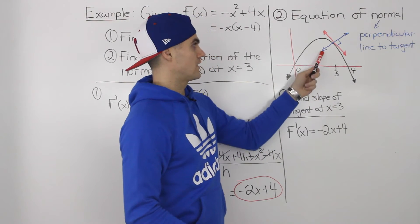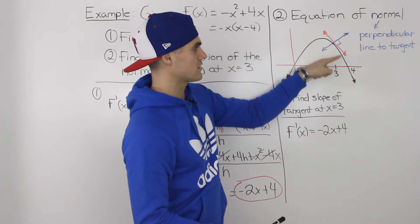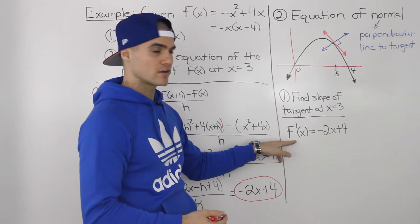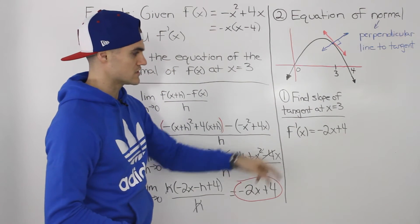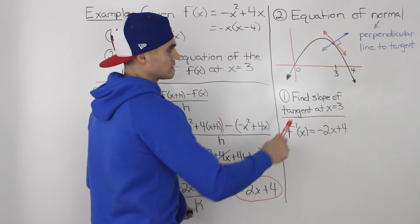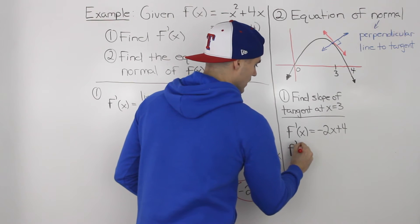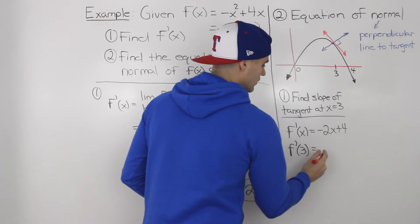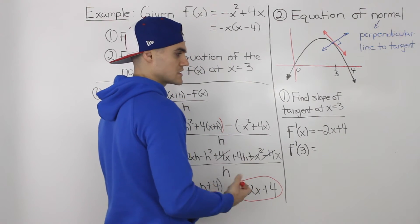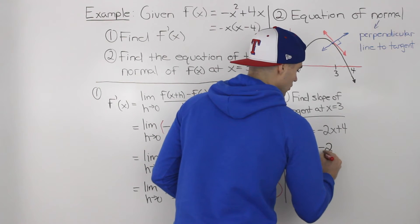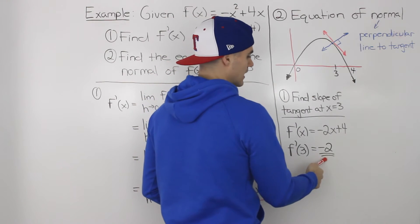To find the equation of the normal (the blue line), the first step is to find the slope of the tangent (the red line). We use the derivative found in step one: f'(x) = -2x + 4. For the slope of the tangent at x = 3, we find f'(3): negative 2 times 3 is -6, plus 4 gives a slope of the tangent of -2. So the slope of this red line is -2.